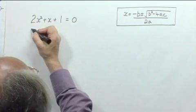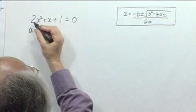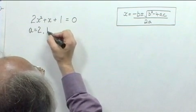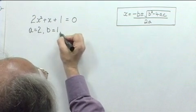The value of a, which is the coefficient of x squared, is 2. The value of b is 1, and the value of c is also 1.